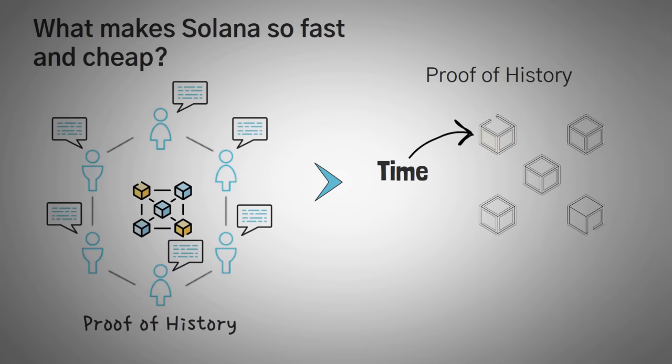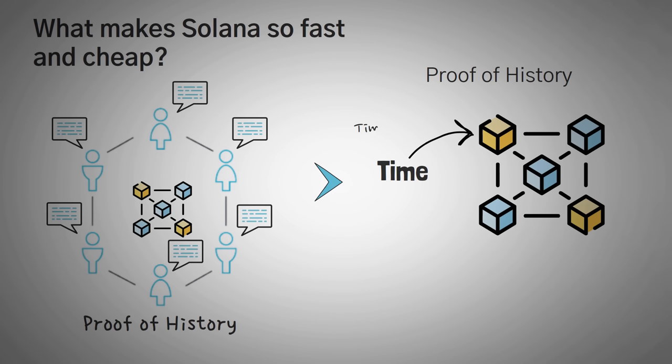So you need to know proof of history is not a consensus mechanism, but it is a way of integrating time into the blockchain data. We use something called timestamps to place a specific date and time on the blocks. And we do this so that it allows for a very fast sequencing of validators, basically so that they know their order to submit blocks without having to communicate back and forth.